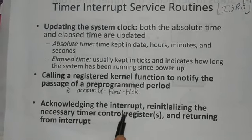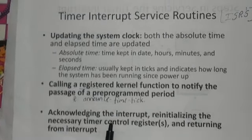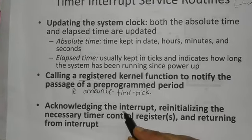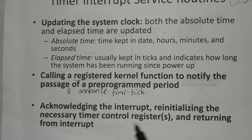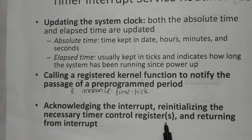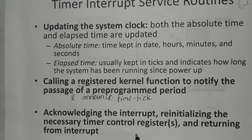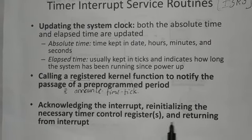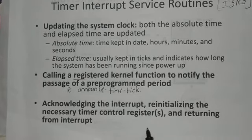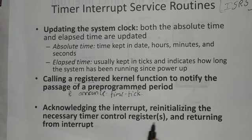The next step is acknowledging the interrupt. Acknowledging the interrupt means that after the system has been interrupted by a device, after announcement of the time tick or the interrupted program is executed and completed, the status of this interrupt is submitted to the device. Afterwards, reinitializing the necessary time control registers and returning from interrupt. After completion of the timer interrupt, the suspended program or suspended task resumes running and all the control registers are reinitialized.